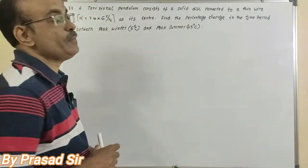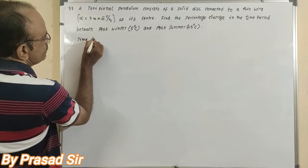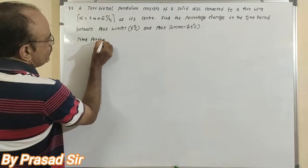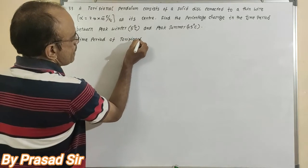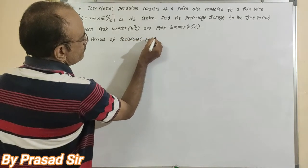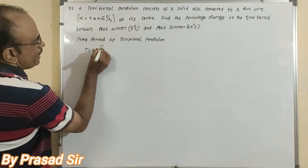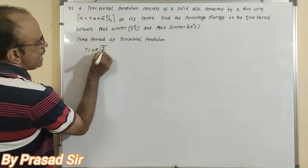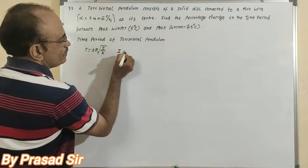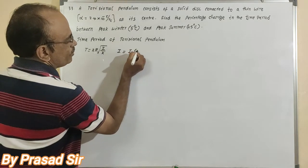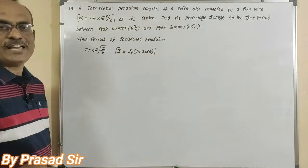The time period of the original pendulum T is equal to 2 pi times square root of I by k. This is very important. Here I is equal to I naught times 1 plus 2 alpha theta, as we did in the previous problem.